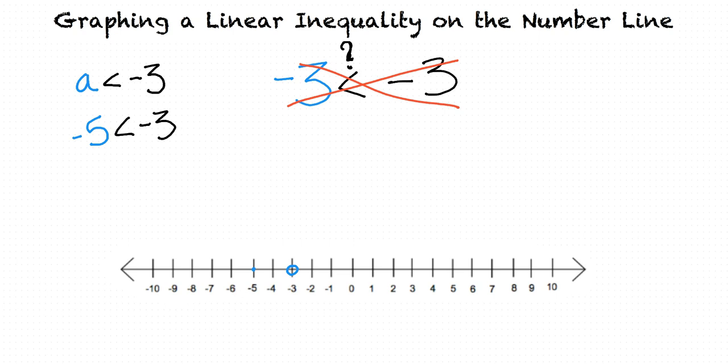Now we can decide which side of this point should be highlighted on the number line. We know that only values less than negative 3 will satisfy this inequality. So we want to highlight all the values less than negative 3, like this.